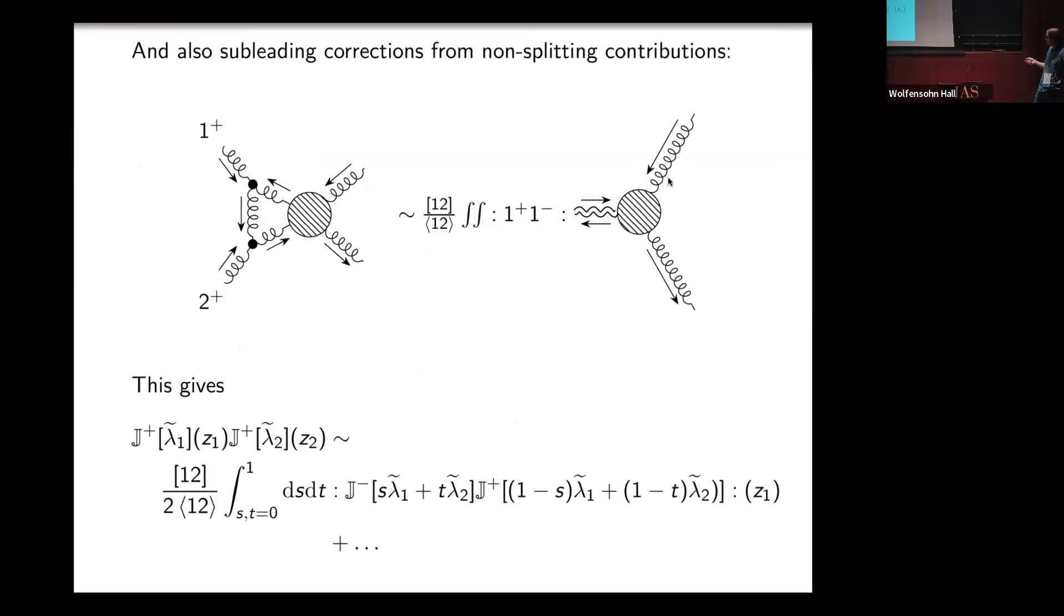Where do those sub-leading poles come from? If I have a diagram like this, and this blob represents my form factor, and here I've drawn the flow of helicity—any diagram like this, it's possible that when 1 plus and 2 plus become collinear, one gets a singularity. But this singularity is not represented by a single state anymore; it's represented by two states. What does that mean in the chiral algebra language? It means that the OPE of j plus and j plus must have a term which is a normally ordered product of a minus and a plus.